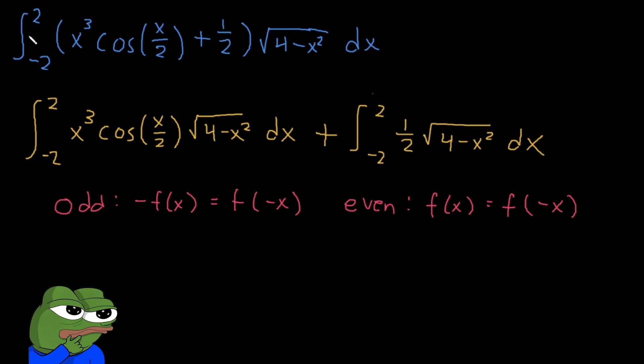I want you guys to recall the definition of odd functions and even functions. Odd functions are that negative f of x is equal to f of negative x, and even functions are f of x is equal to f of negative x. I only bring this up because this left side integral kind of looks like an odd function.